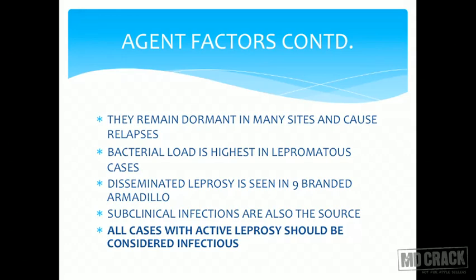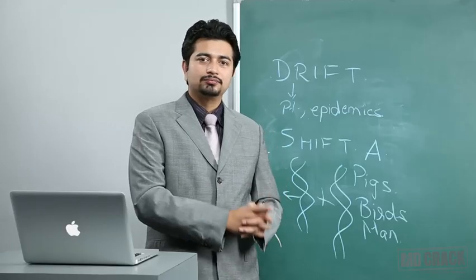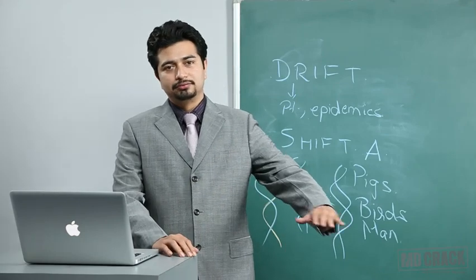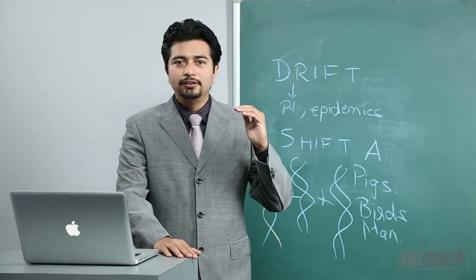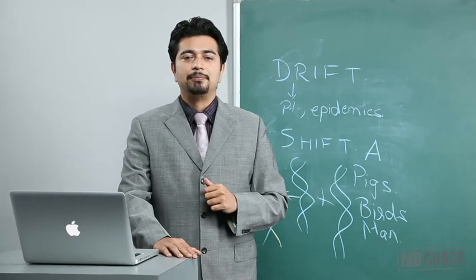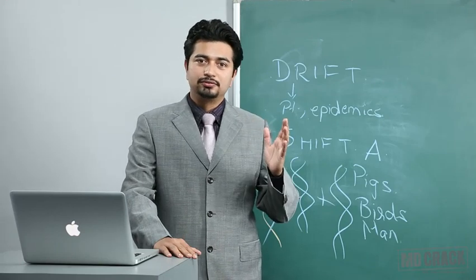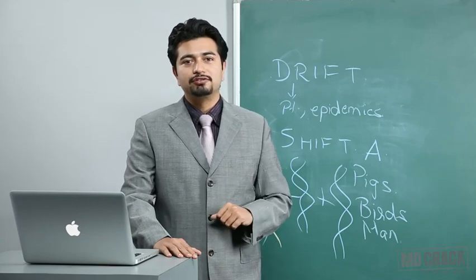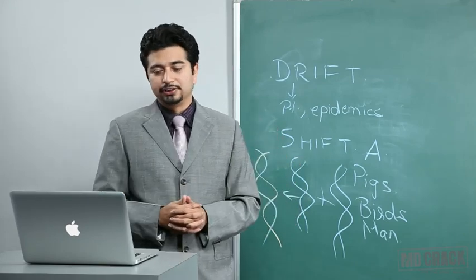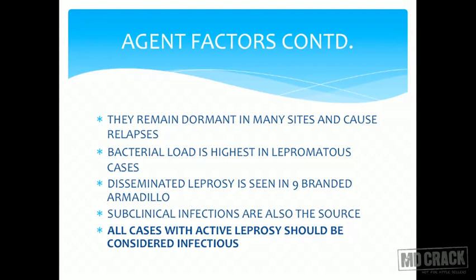Like tuberculosis, leprosy also remains dormant in many sites and can cause relapse. Bacterial load is highest in lepromatous cases and least or absent in tuberculoid cases. Lepromatous leprosy is the worst-case scenario and tuberculoid is the best-case scenario — these represent the spectrum of leprosy. Disseminated leprosy is also seen in nine-banded armadillos.